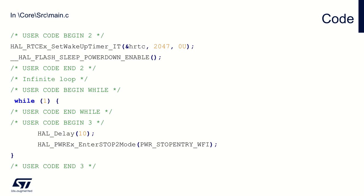With the project created in CubeMX or CUBE IDE, I can switch to the coding view and define my application. I will be using the wake-up timer prepared by CubeMX, and I just need to activate it using the HAL RTC function. One of the parameters is 2047, which is exactly right for 2 kHz to make the period one second. I will also enable the flash sleep power-down to save some power during the low power state.